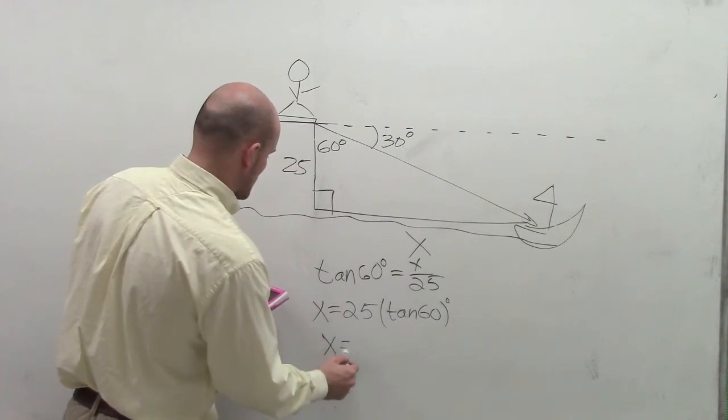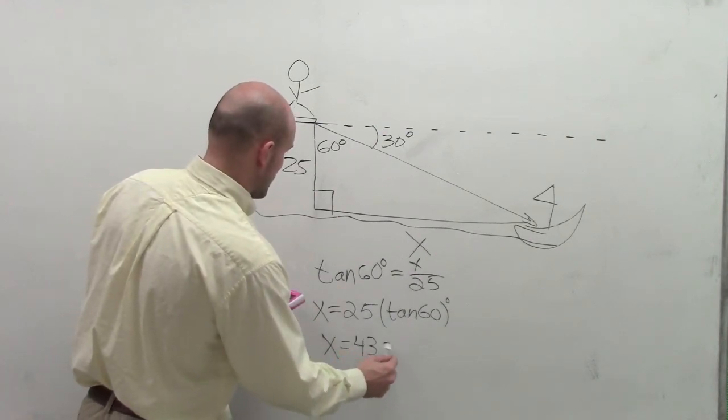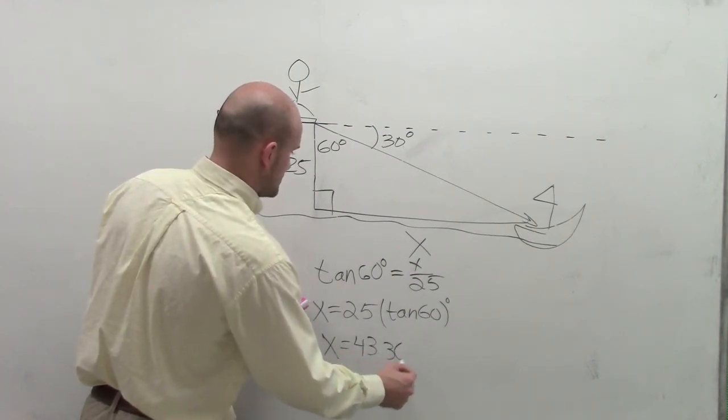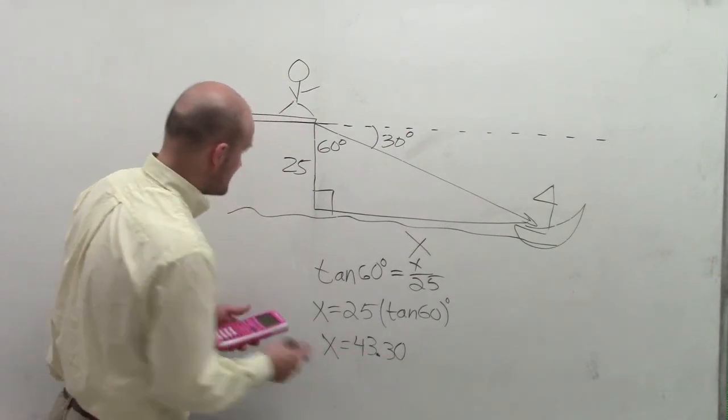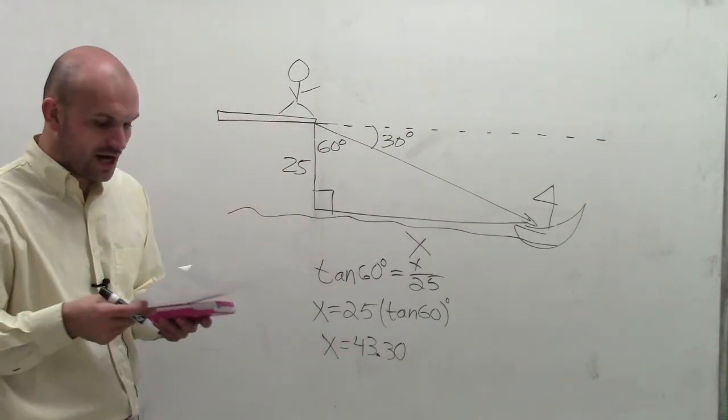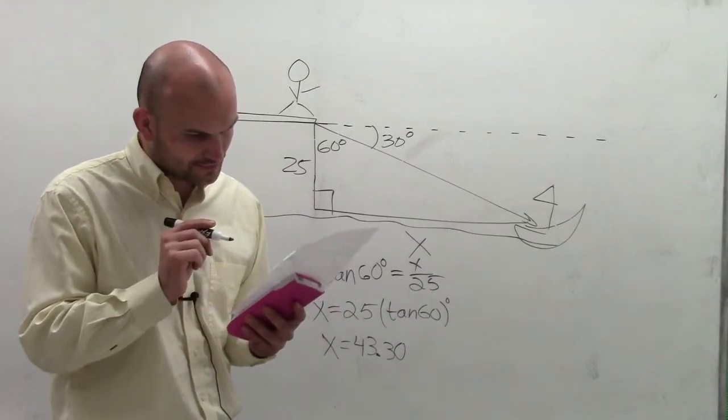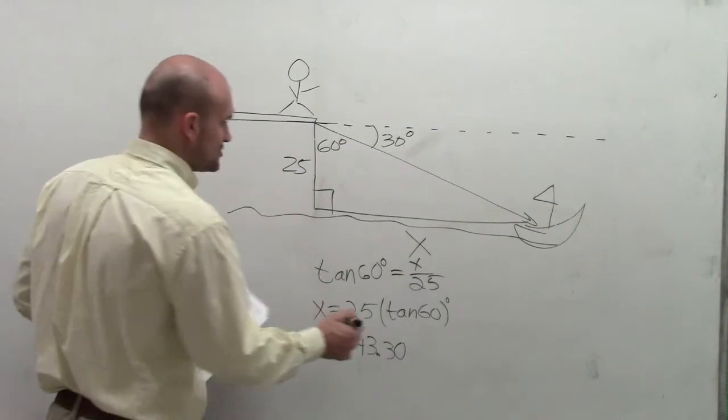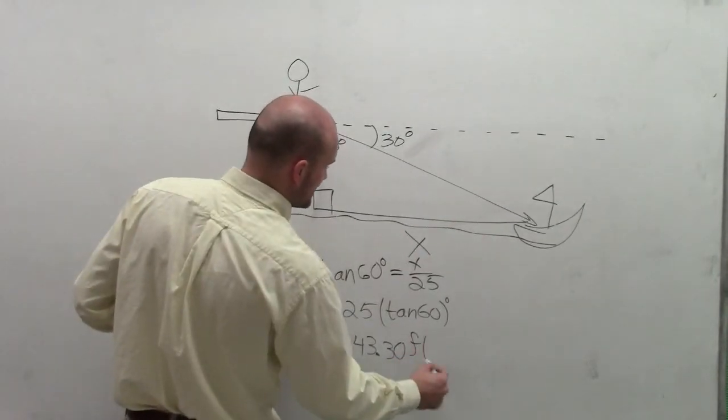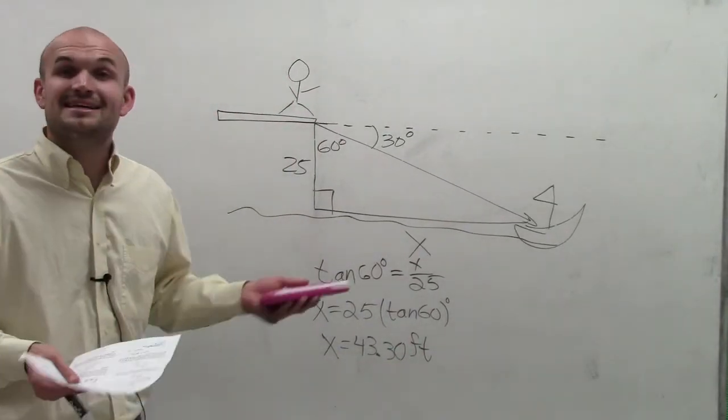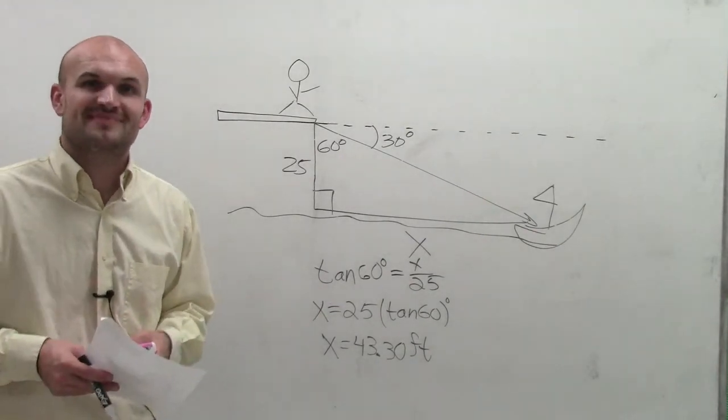Which is going to be x equals 43.30. And our original height of our problem was dealing with feet, so this distance is also going to be in feet. So there you go, that's how you deal with a problem with the angle of depression. Thanks.